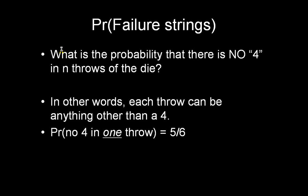In a throw of a die, because each throw is considered an independent event, if you're going to get no four in n throws, the probability is simply five by six times five by six times five by six. And you keep doing that until you have reached all n throws.